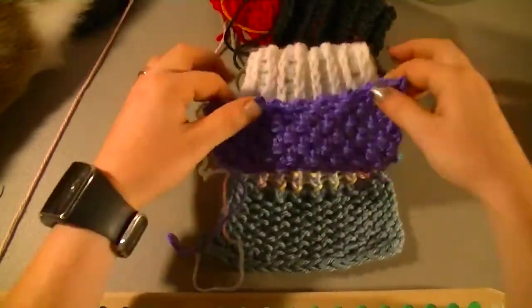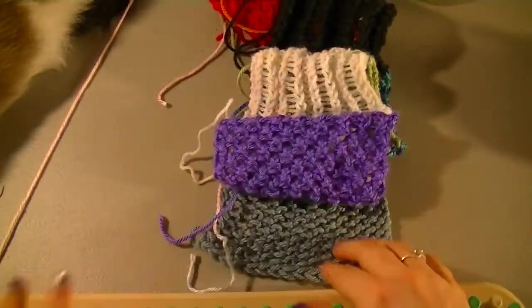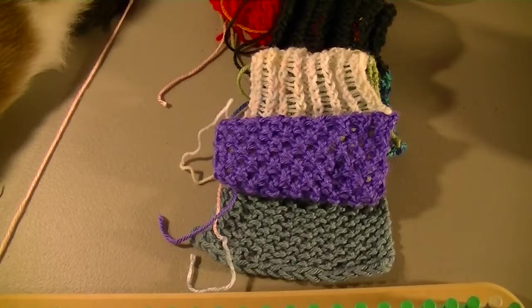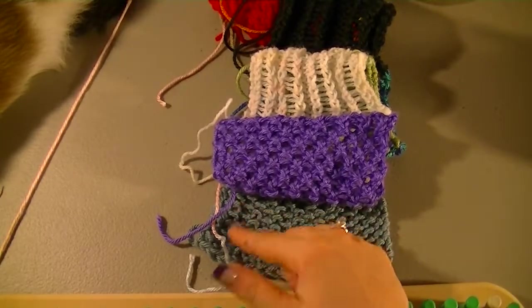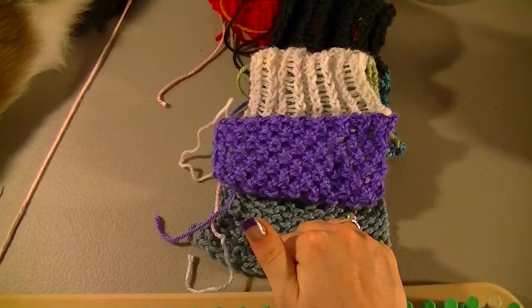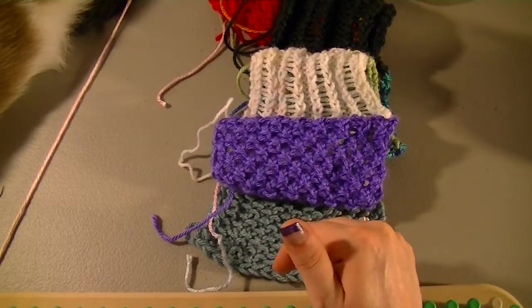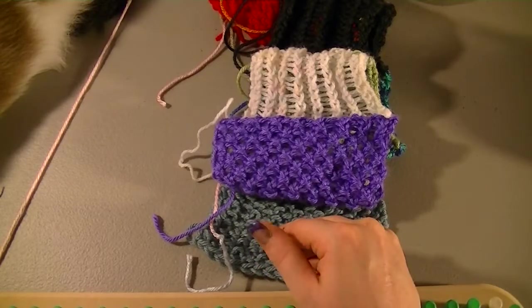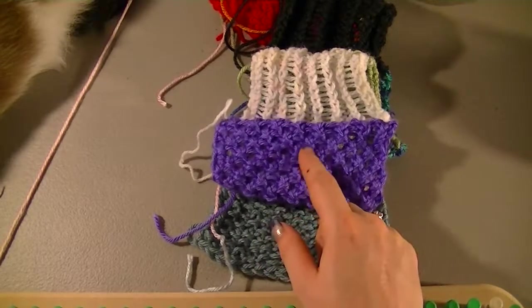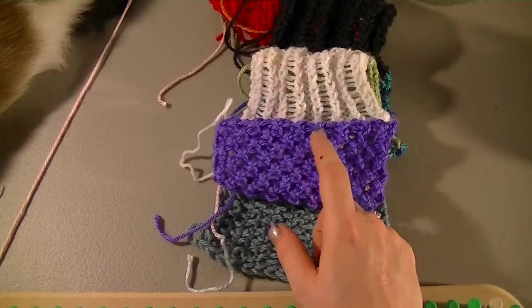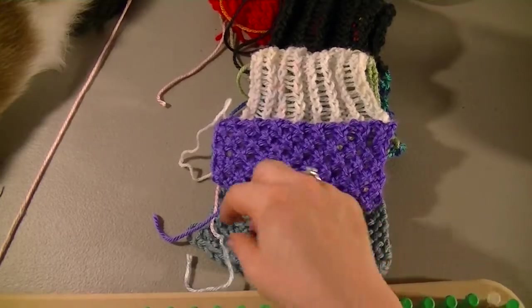The seed stitch is e-wrap one, purl one, e-wrap one, purl one, or knit one, purl one, knit one, purl one, however you prefer to phrase it. And then your next row is opposite. The double seed stitch or double moss stitch, you do two rows of e-wrap one, purl one, and then you do two rows of opposite.